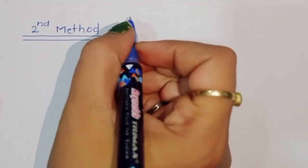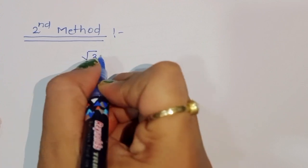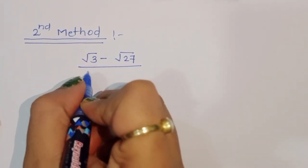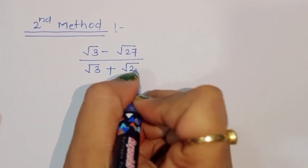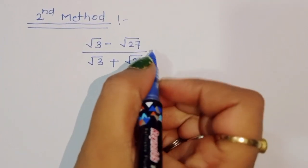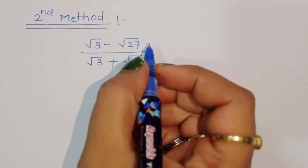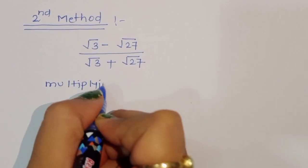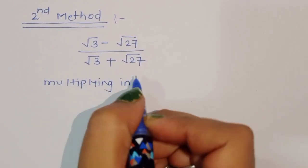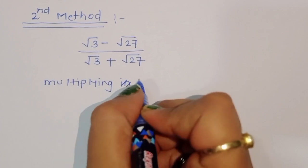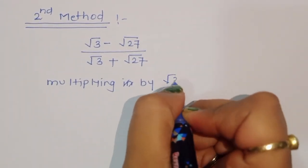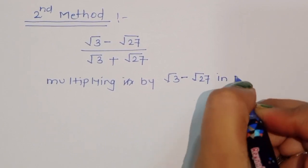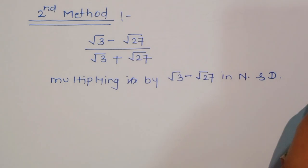The question is again: square root of 3 minus square root of 27, divided by square root of 3 plus square root of 27. For the second method, we will multiply both numerator and denominator by the conjugate square root of 3 minus square root of 27.